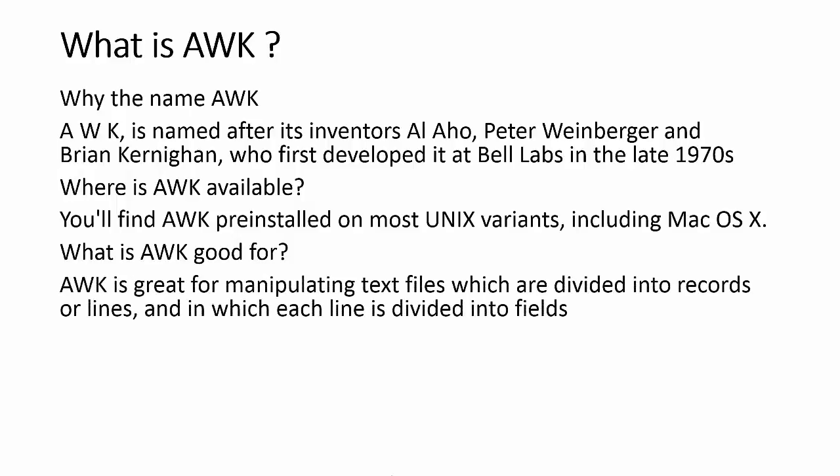What is AWK good for? AWK is great for manipulating text files which are divided into records or lines, where lines are divided into fields. It doesn't require that every line have the same format. You can use AWK to find interesting records in a data file, output only selected fields, and perform manipulations like swapping the order of fields or combining multiple fields into one.